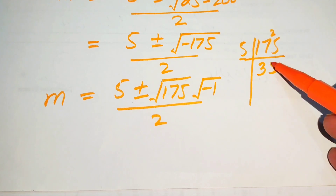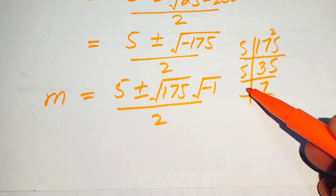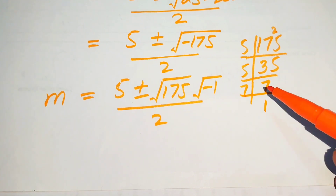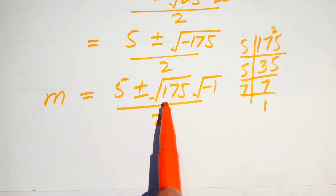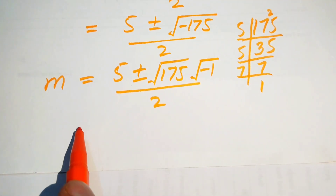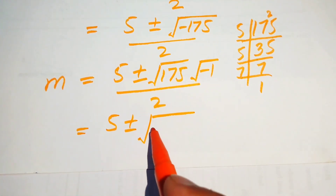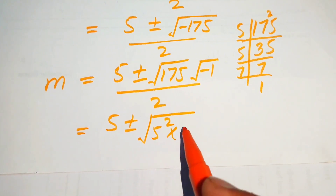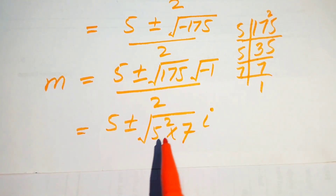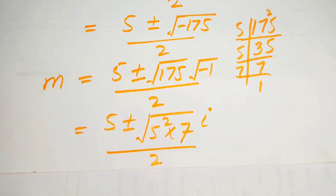The prime factors of 175 are 5 squared times 7. So we rewrite the expression as 5 plus or minus the square root of 5 squared times 7, and we know that the square root of negative 1 equals i (iota), all divided by 2.